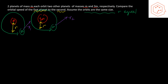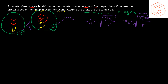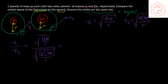We can write v1 = √(GM/r) and v2 = √(G·3M/r). To compare them, we take the ratio v1/v2, which equals √(GM/r) divided by √(3GM/r). We can combine these into a single square root of (GM/r) divided by (3GM/r).